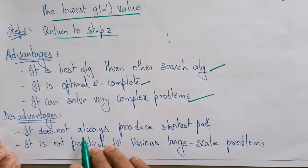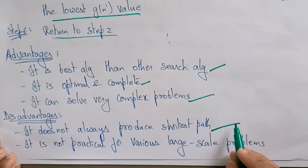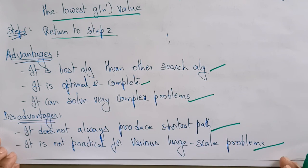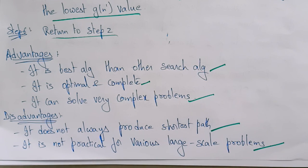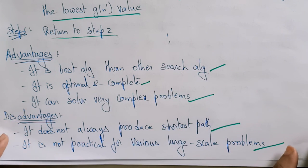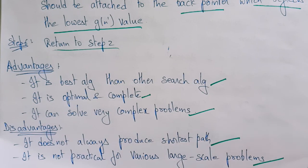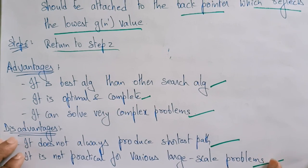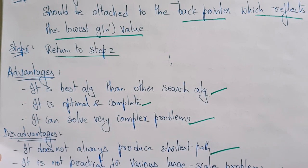Disadvantages: it does not always produce the shortest path; it is not practical for various large-scale problems because calculating multiples and backtracking via back pointers becomes more complex. In the next video I will explain with an example. Thank you.